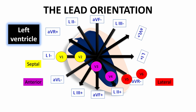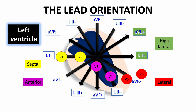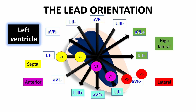AVL and Lead 1 limb leads are closer to the high lateral wall of the left ventricle, so they represent the changes that occur in the high lateral wall. AVF and Leads 2 and 3 limb leads are closer to the inferior wall of the left ventricle, so they represent the changes that occur in the inferior wall of the left ventricle.